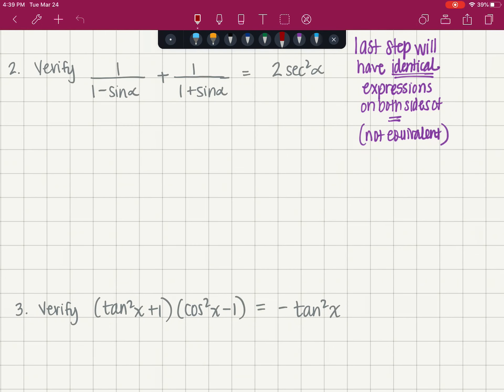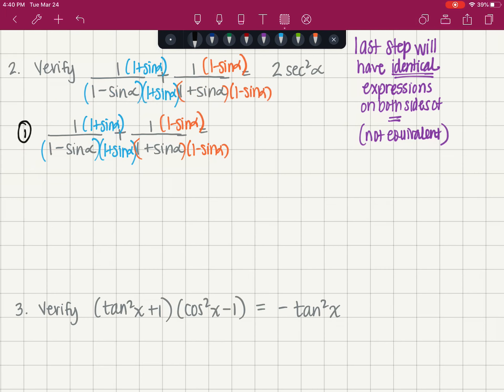When we add fractions, we need a common denominator. So the first fraction is going to need one plus sine of alpha. One plus the sine of alpha. And the second fraction needs one minus the sine of alpha.